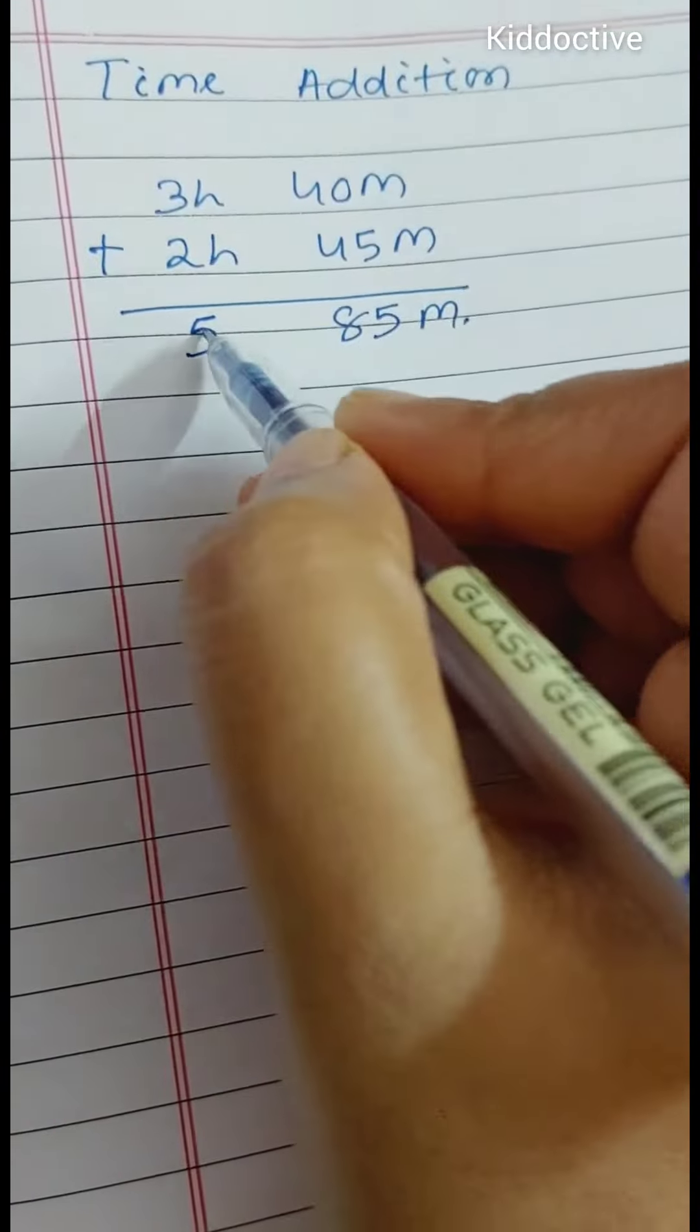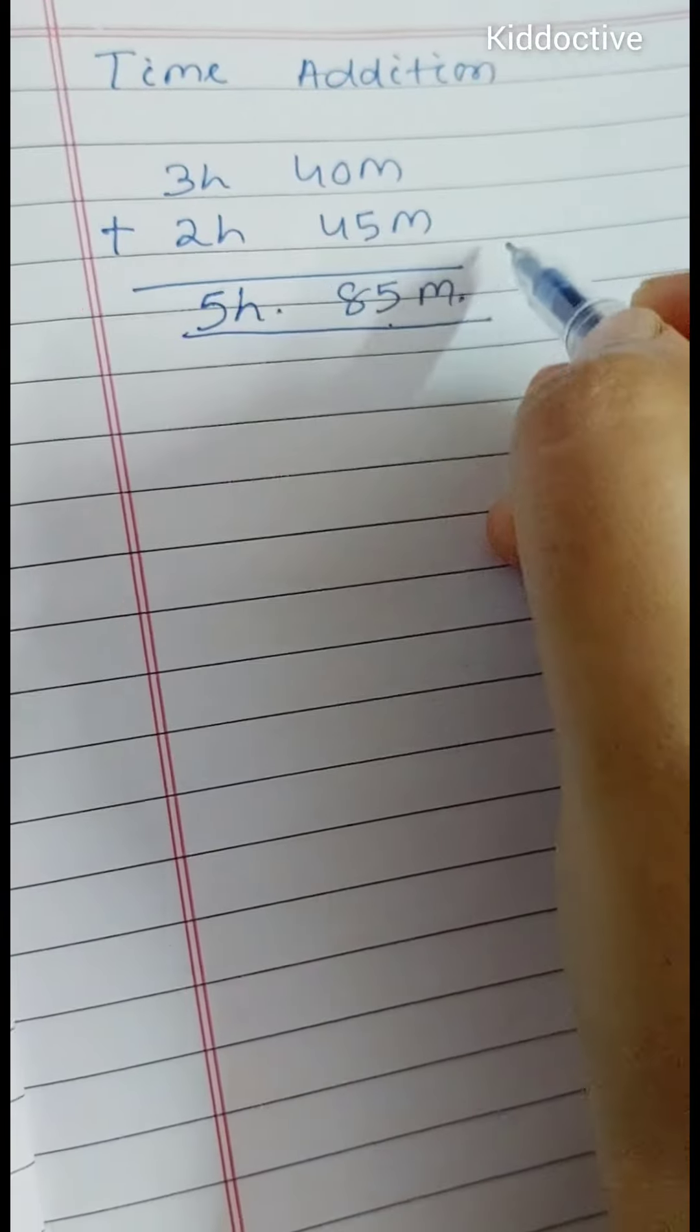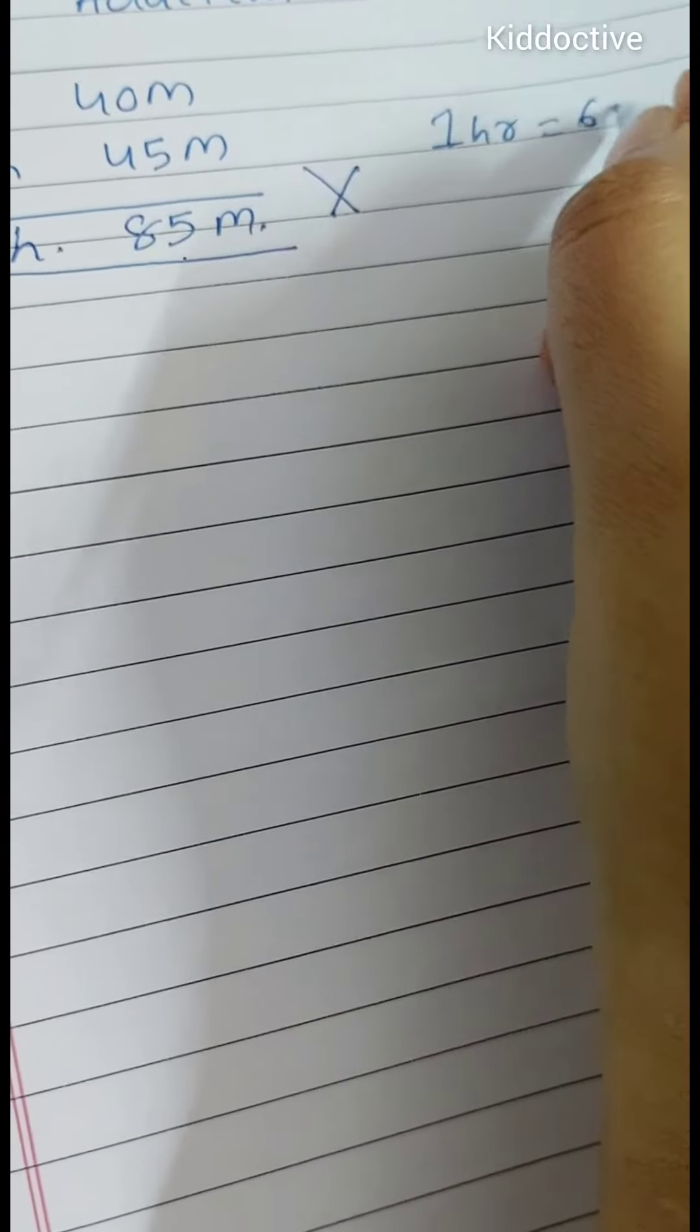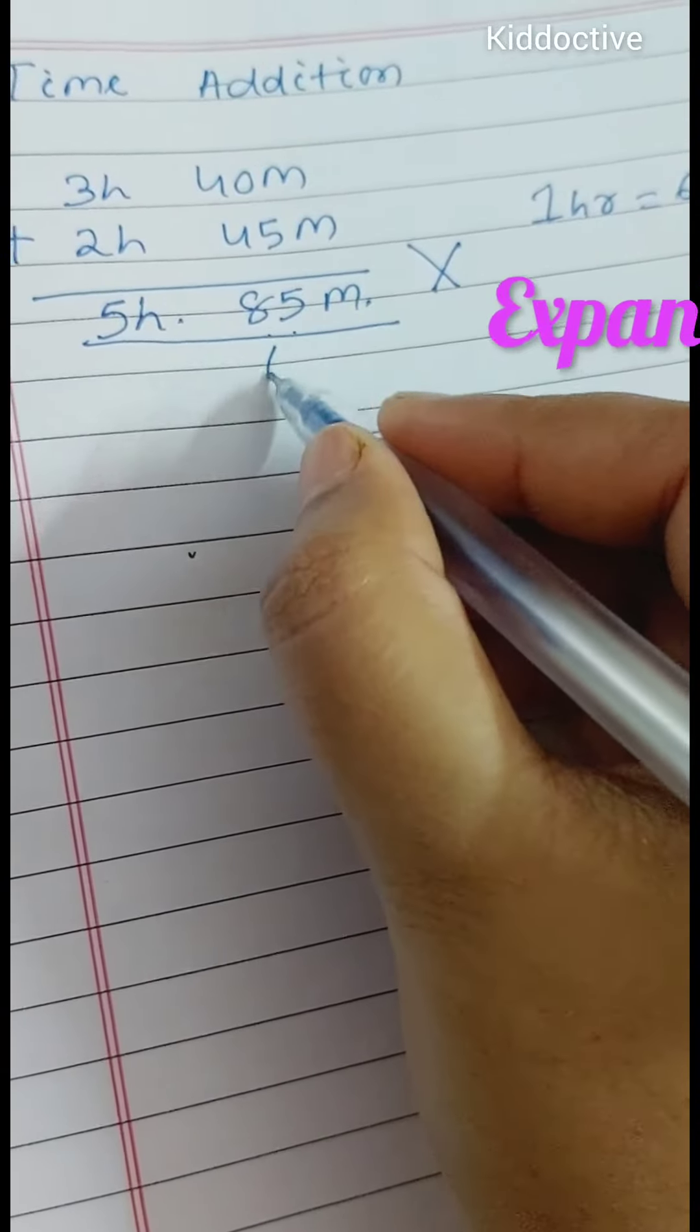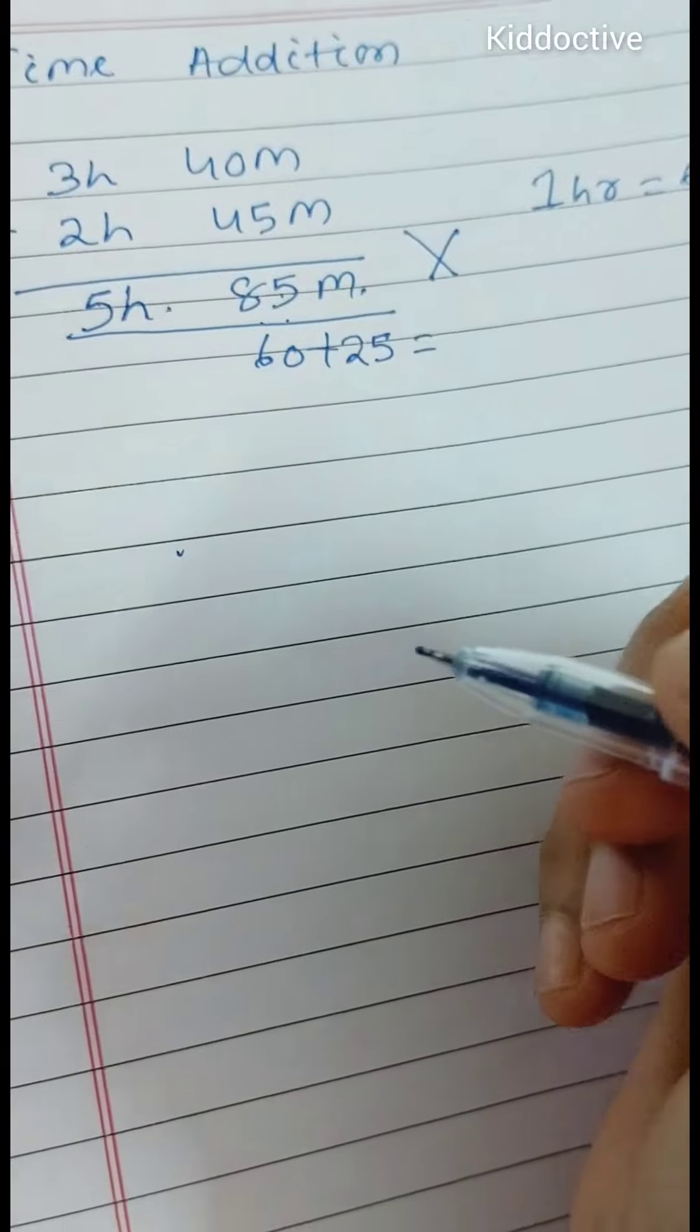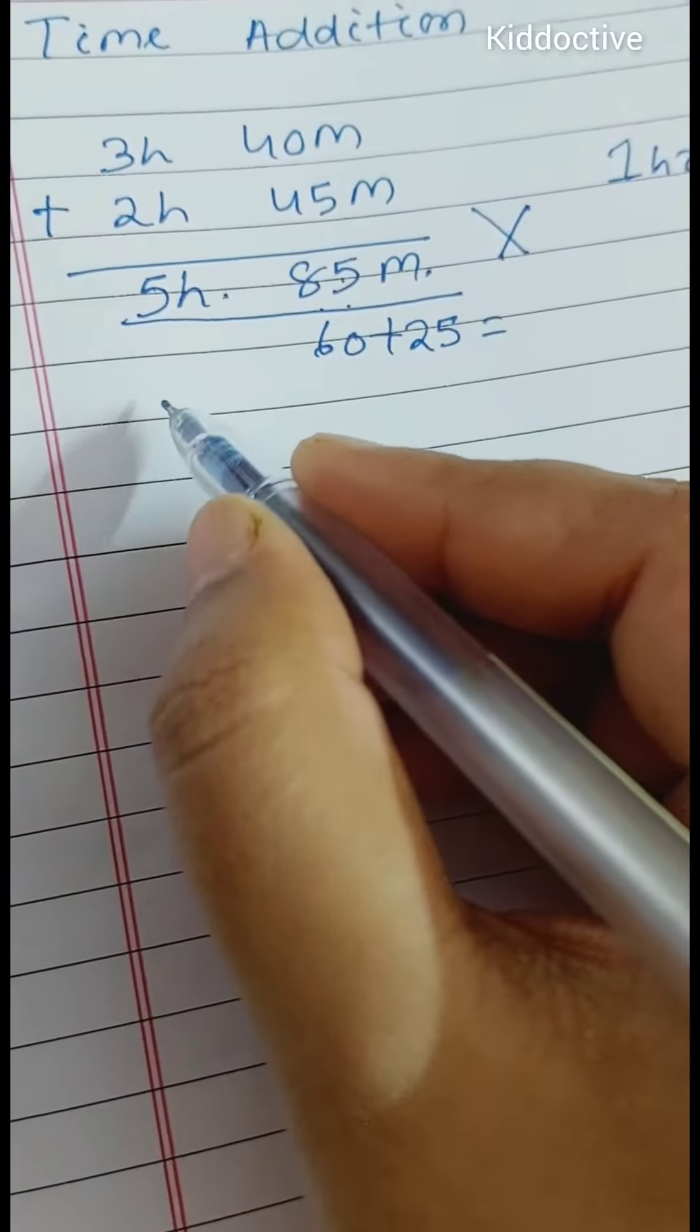But this one is wrong. Do you know 1 hour equals 60 minutes? So here 60 plus 25 minutes equals 85 minutes. So this is wrong.